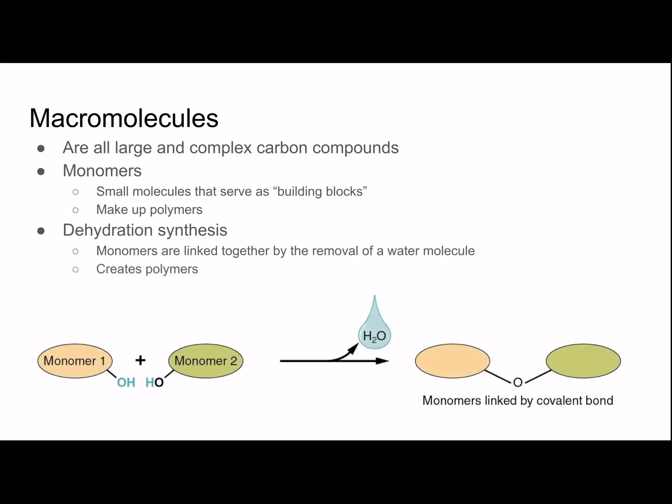So let's look at this picture. As you can see, we have two monomers that are going to be linked together when water is removed. This creates a polymer that is connected by a covalent bond. The way I like to think about it is dehydration — removing water, dehydrating the monomers.